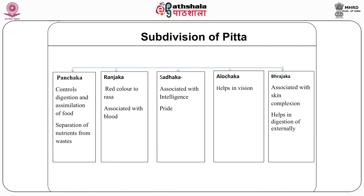The subdivisions of Pitta and their functions are as follows. Pachak Pitta controls the digestion and assimilation of food and is responsible for separation of nutrients from wastage — it is equivalent to Jatharagni, the metabolic fire. Ranjak Pitta is responsible for giving red color to the Rasa and is associated with blood. Sadak Pitta is associated with discrimination, intelligence, pride and enthusiasm. Alochak Pitta helps in vision. Brajak Pitta is associated with skin complexion and is helpful in digestion.